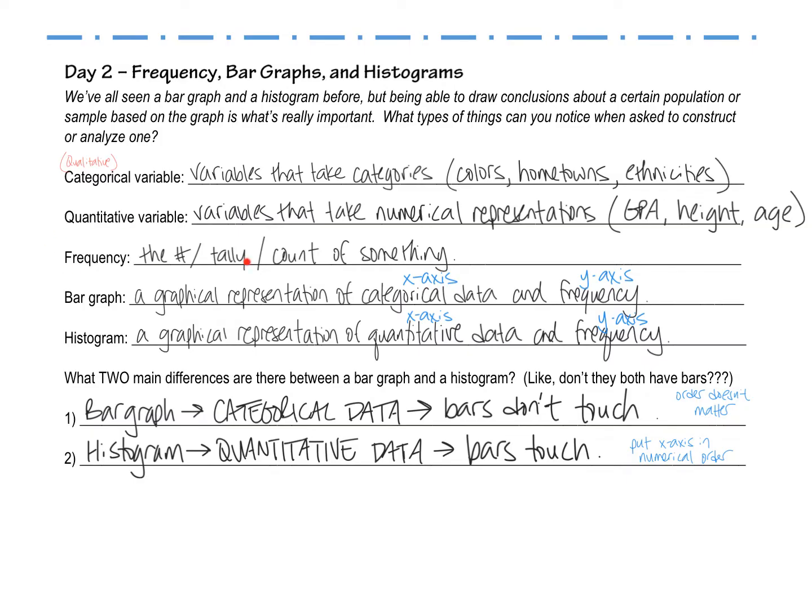Moving on. Frequency: the number something happens. So a frequency, what I would do is I would record the number of brunettes in my math class if I were trying to figure that out. A bar graph is a graph with bars. A histogram is also a graph with bars. Some really important key concepts here, though, is that a bar graph uses categorical data and a histogram uses quantitative data. In a bar graph, the bars don't touch. The reason for that is because the order doesn't matter in a bar graph. I could put brown hair first, or I could put blonde hair first, or I could put red hair first. It doesn't matter where you put the bars.